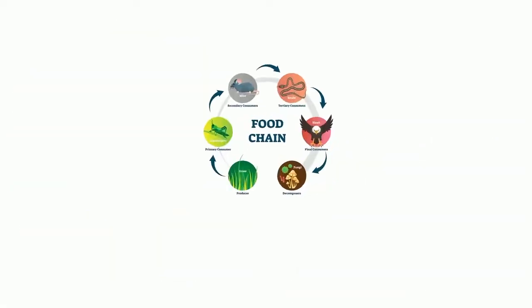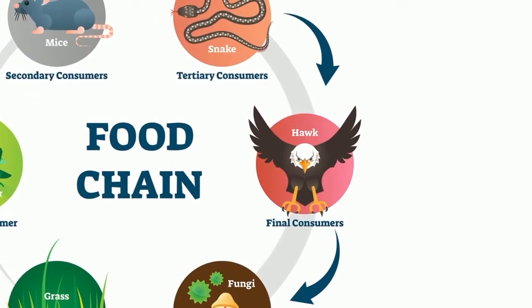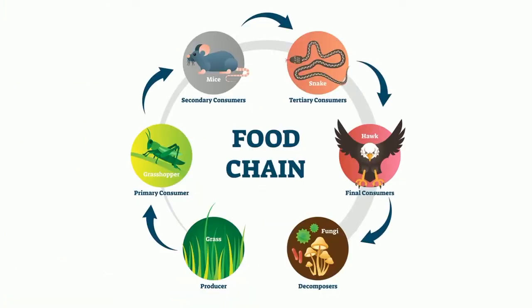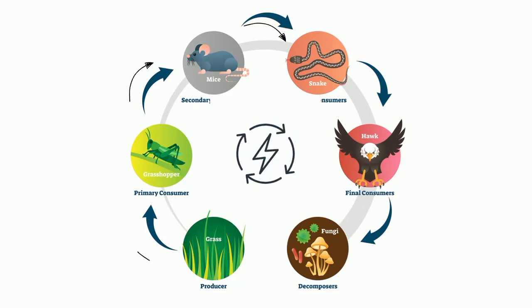For example, take this food chain involving a hawk. Notice the hawk eats the snake, which eats the mice, which consumes the grasshopper, which consumes the producer. At each level, energy is being transferred from one organism to another.